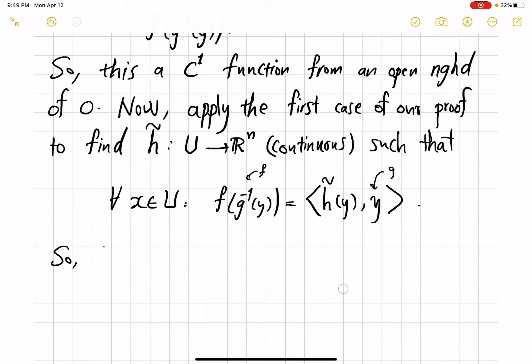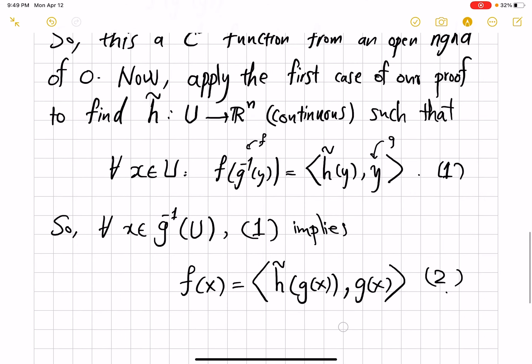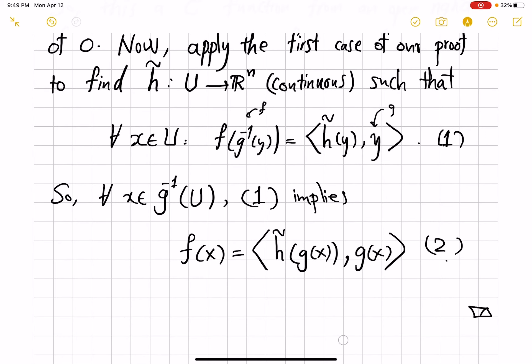So for every x in image of g inverse of U, f(x) equals h tilde of g(x) dot product with g(x). So this comes from, so if this is 1, so 1 implies 2, and 2 is exactly what we wanted to show because h tilde composed with g is continuous. Because h tilde is continuous, and g was C¹.